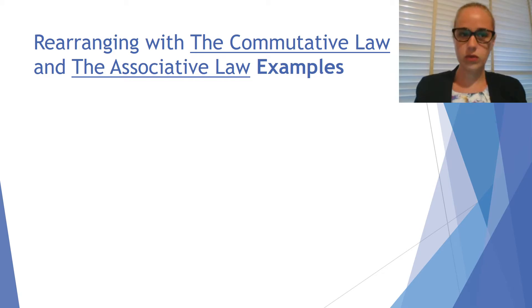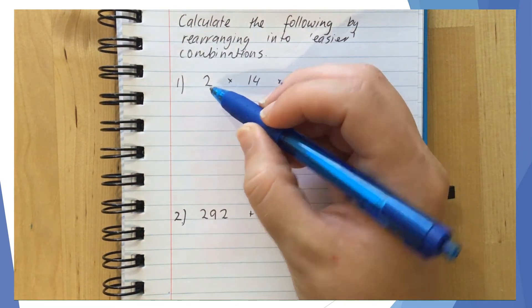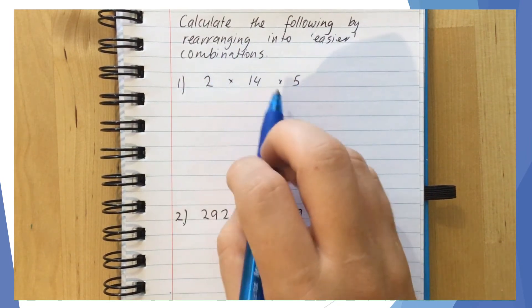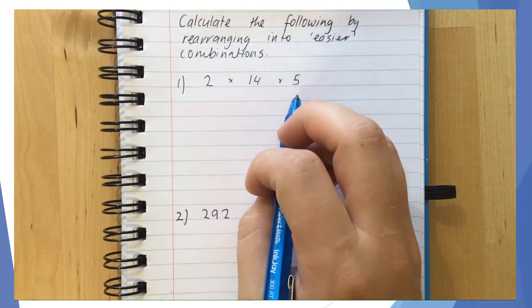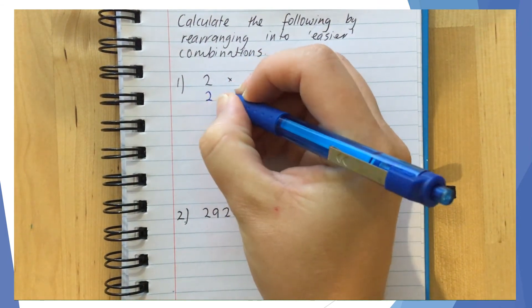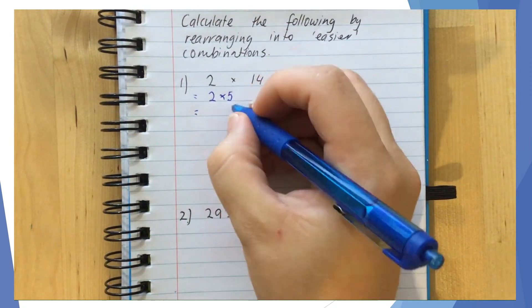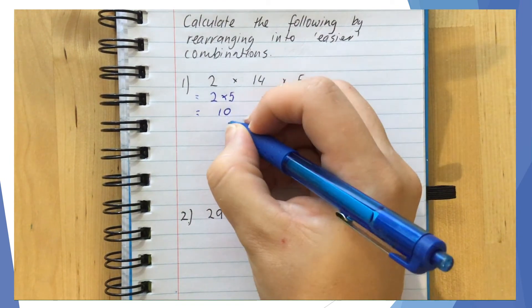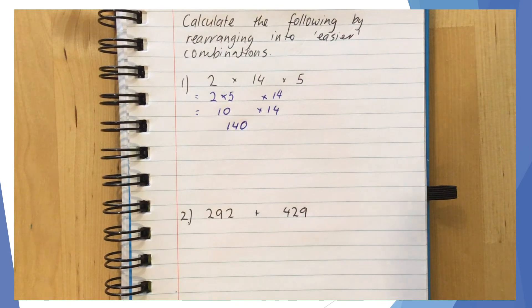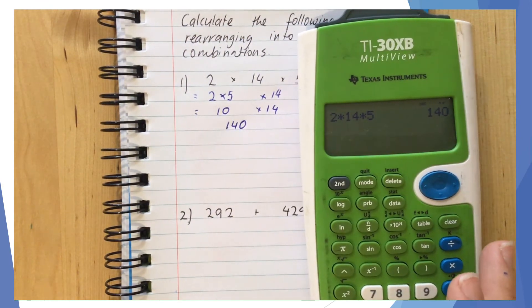Now let's look at some examples: calculate the following by rearranging them into easier combinations. In example 1 we've got 2 times 14 times 5. Easy numbers to multiply together here are 2 and 5, because they multiply to give 10, which is a nice number to multiply further from. So 2 times 5 equals 10, and then I still need to multiply that by 14. So 10 times 14 gives me 140. Checking on a calculator: 2 times 14 times 5 gives 140 — my answer is valid.